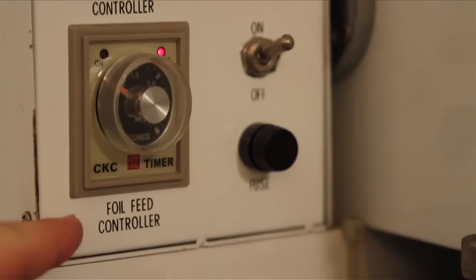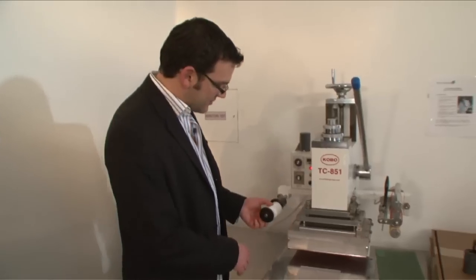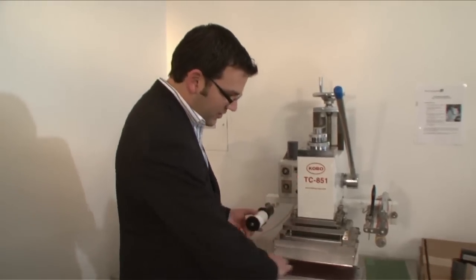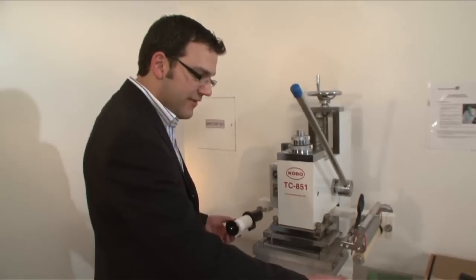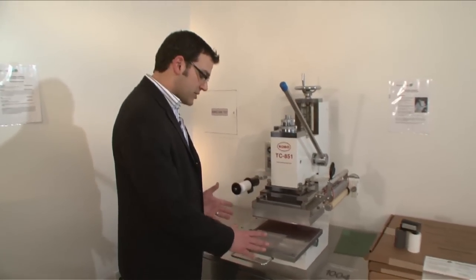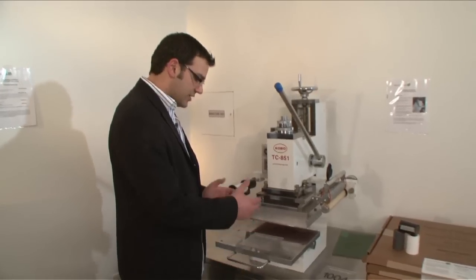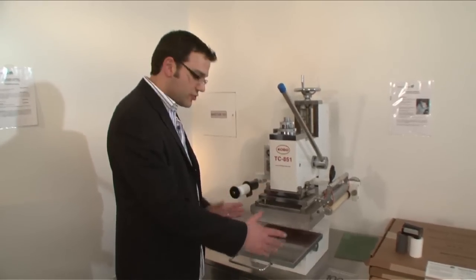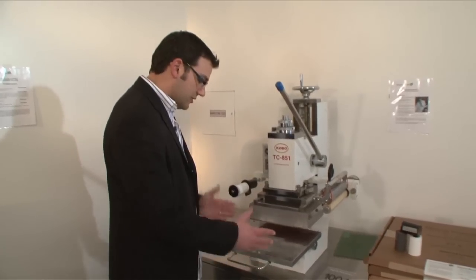Right here we have an automatic feed controller. What that does is it allows us to mount our foil, run it underneath and it automatically advances. We're not going to use that feature for this demonstration and actually I don't really recommend it. We like to actually place the foil on there manually and I'll show you why in a few minutes. So let's get started.